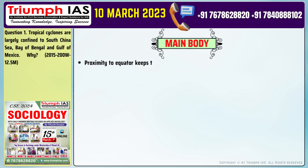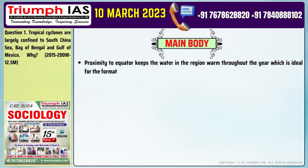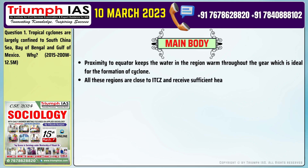Number 1: Proximity to equator keeps the water in the region warm throughout the year, which is ideal for the formation of cyclones. Number 2: All these regions are close to ITCZ and receive sufficient heat, creating a low-pressure area due to thermal heating.